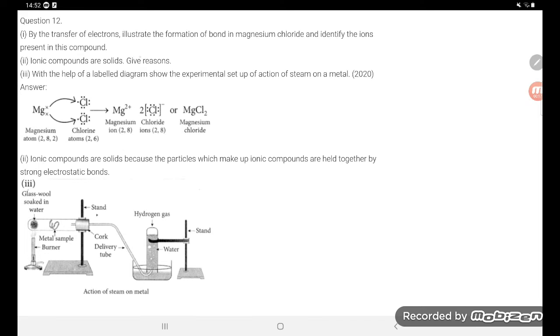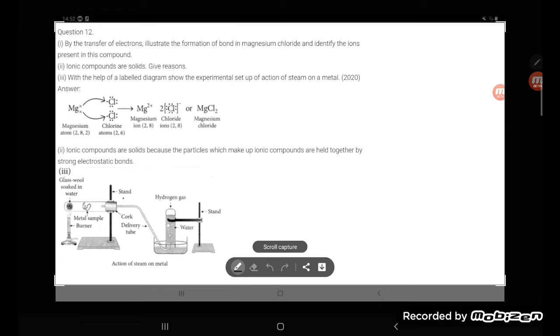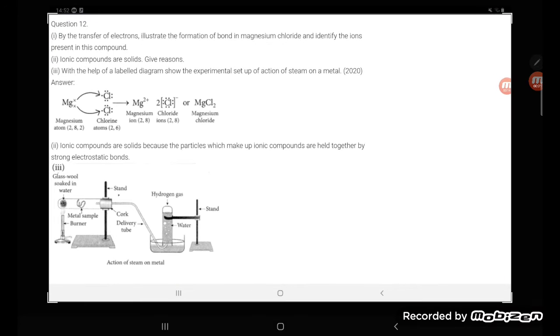formation of what compound? They are talking about magnesium chloride. State the formation of bond in magnesium chloride and identify the ions present in the compound. We need to identify the ions present.